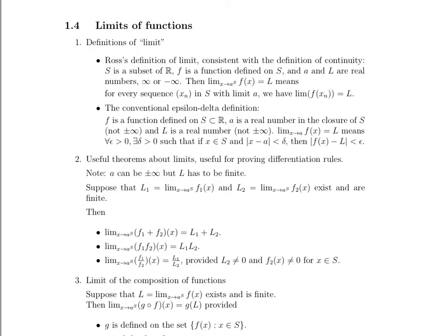Remember, this notation means that as X approaches A within the subset S, of some function F1 and L2 is the limit as X approaches A within the subset S of some function F2, and both of those exist and they're finite. And so what that now means is that if we sum these functions together, F1 and F2, and take the limit as X approaches A within the subset S, then that's going to be equal to the sum of the limits. The limit of the sum is the sum of the limits. The limit of the product is the product of the limits.